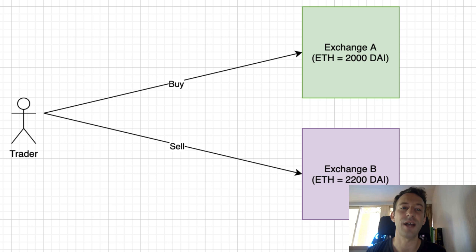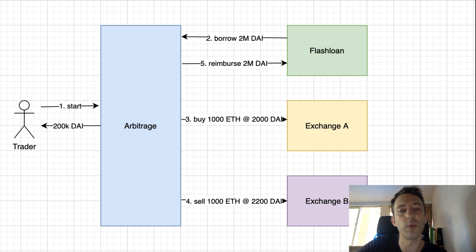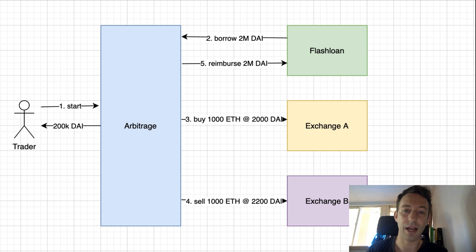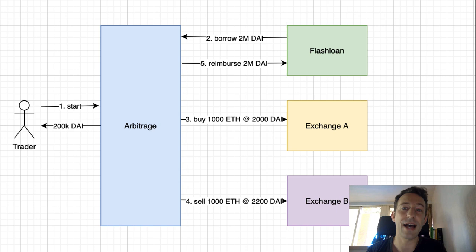To make a decent profit from arbitrage you need a lot of capital, and that's where flash loans are very useful. In our example, we create an arbitrage smart contract, borrow 2 million DAI from the flash loan, buy 1,000 ETH at 2,000 DAI each on exchange A, then sell that ETH on exchange B at 2,200 DAI. We end up with 2.2 million DAI, repay the flash loan, and keep the remaining profit.